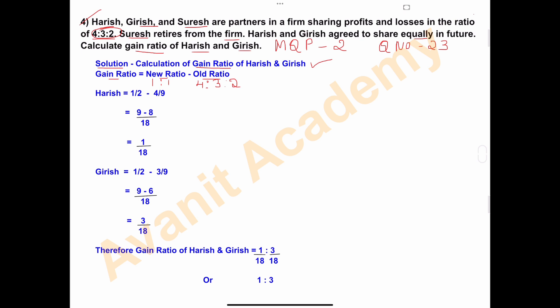First, we will calculate gain ratio of Harish. New ratio 1:1 is 1 divided by 2. 1 plus 1 is 2, so 1 upon 2. Minus old ratio.